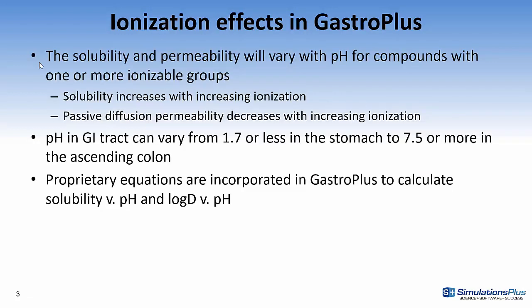The solubility and permeability will vary with pH for compounds with one or more ionizable groups. Solubility increases with increasing ionization whereas passive diffusion permeability decreases with increasing ionization. The pH in the GI tract can vary from 1.7 or less in the stomach to 7.5 or more in the ascending colon. Proprietary equations are incorporated in GastroPlus to calculate solubility versus pH and log D versus pH plots and these are used to describe the dissolution and absorption of the compound along the GI tract.